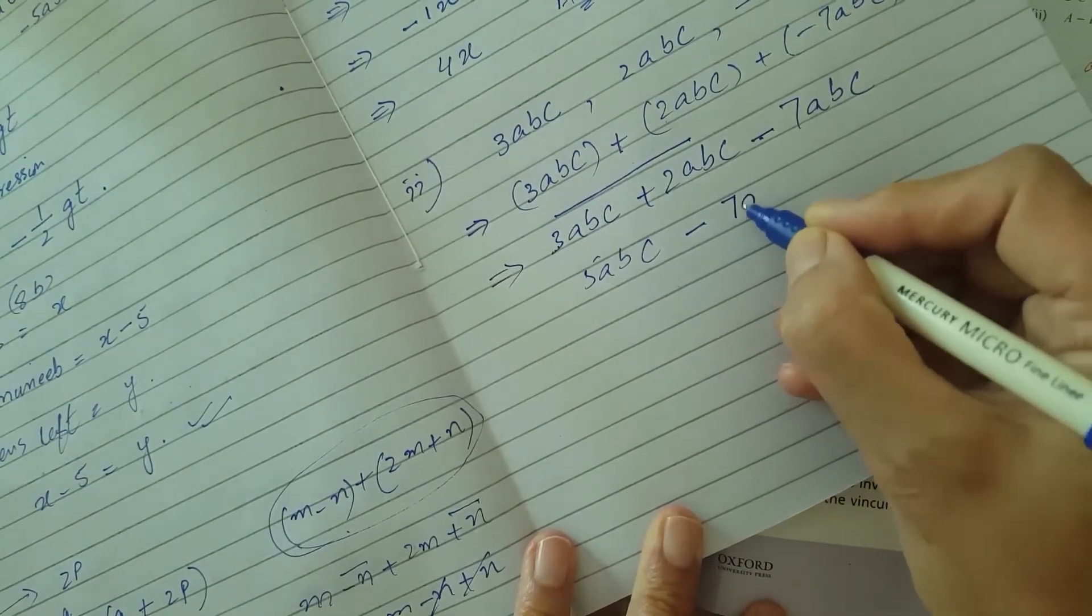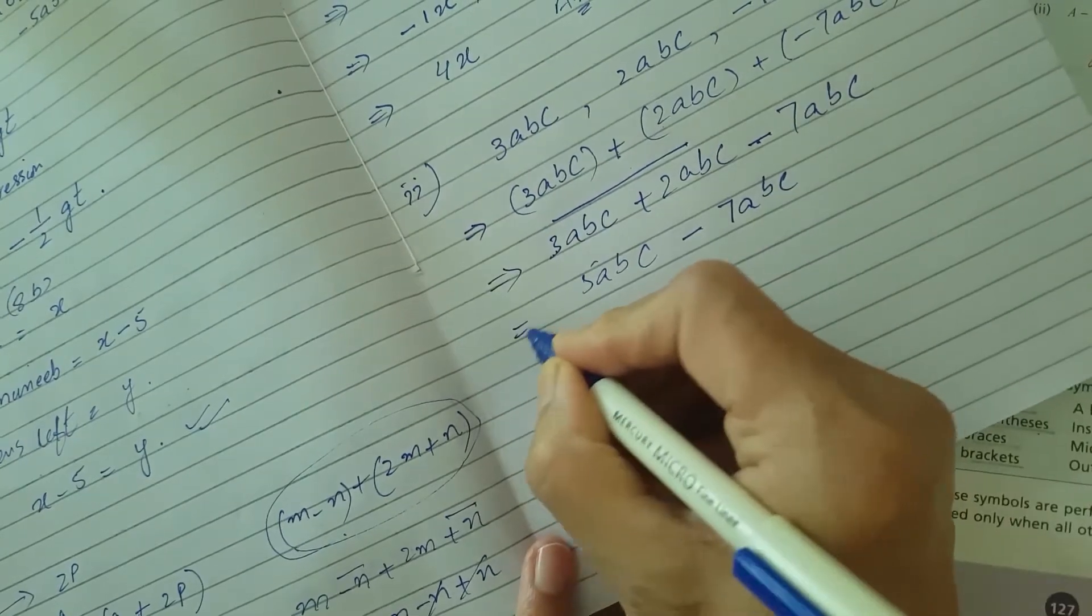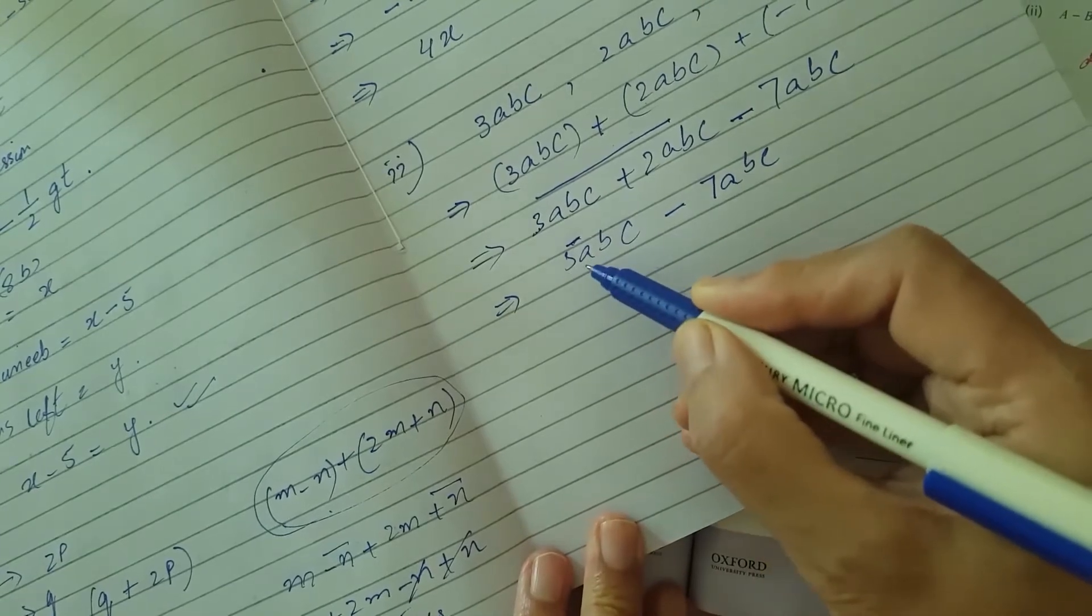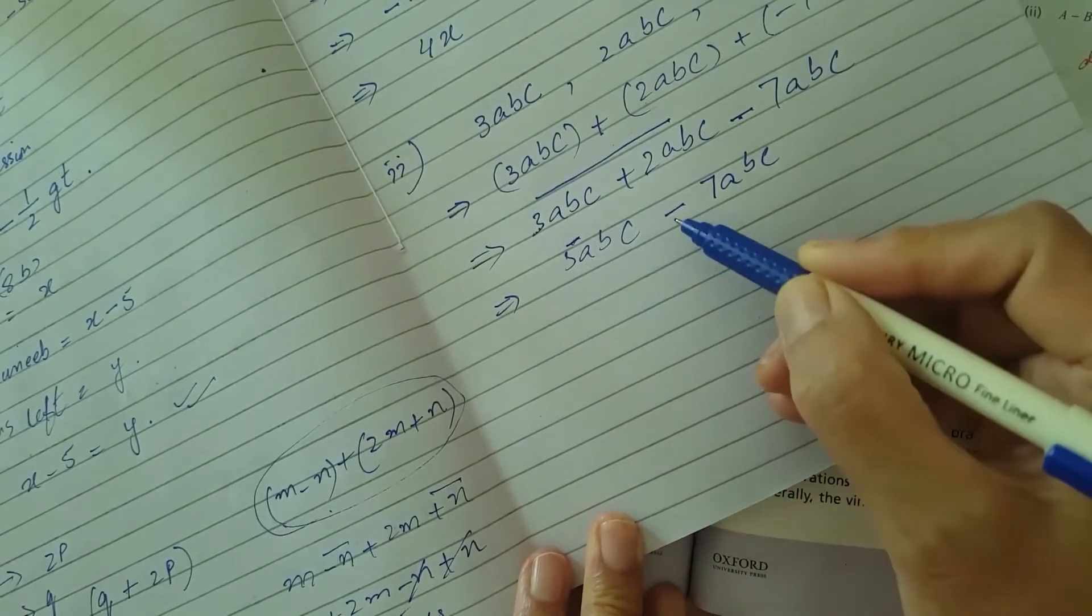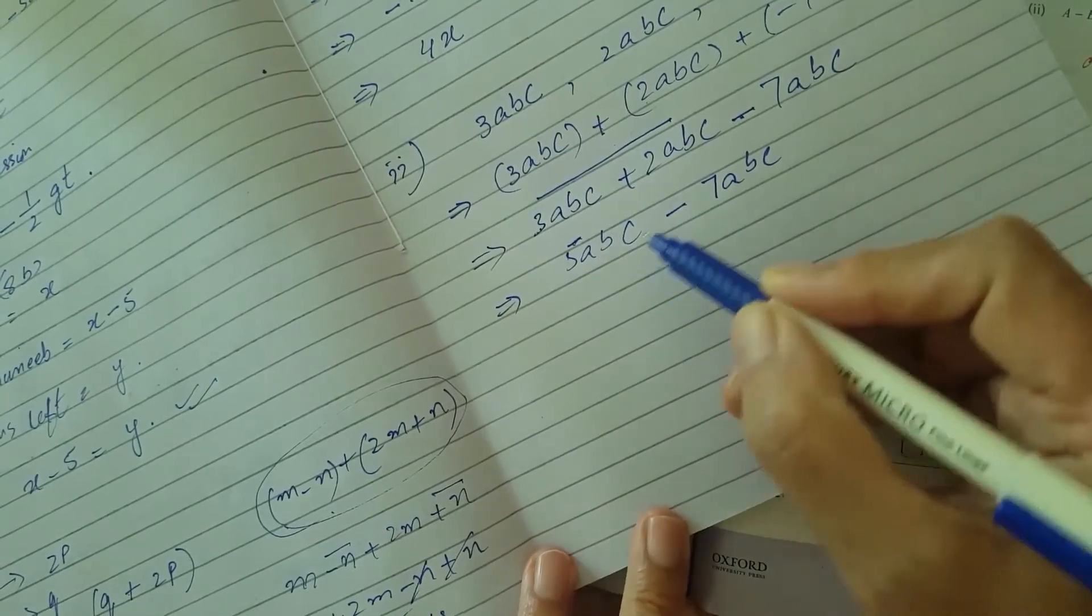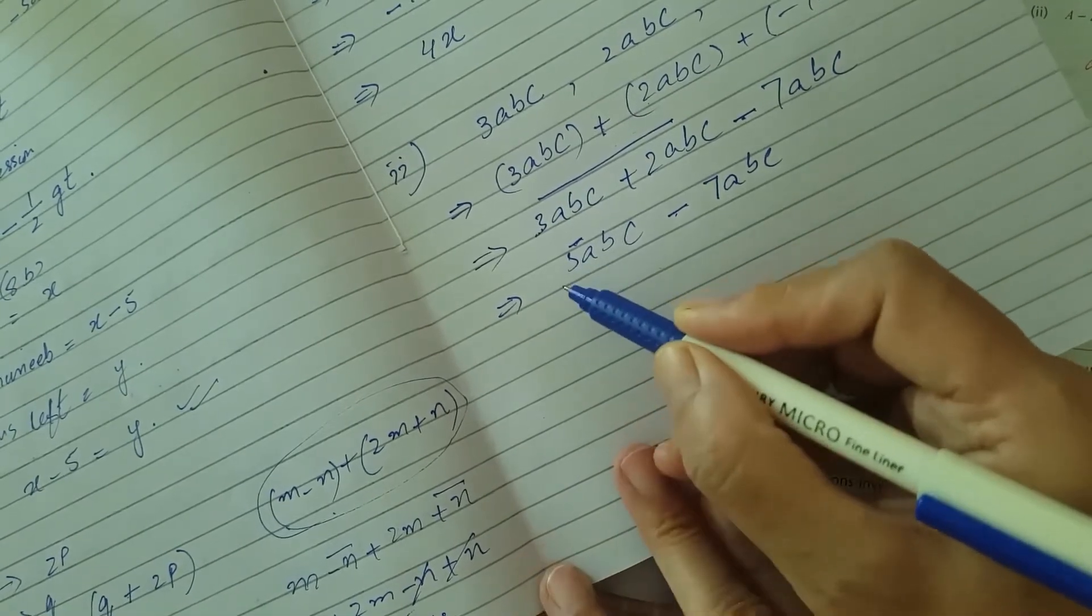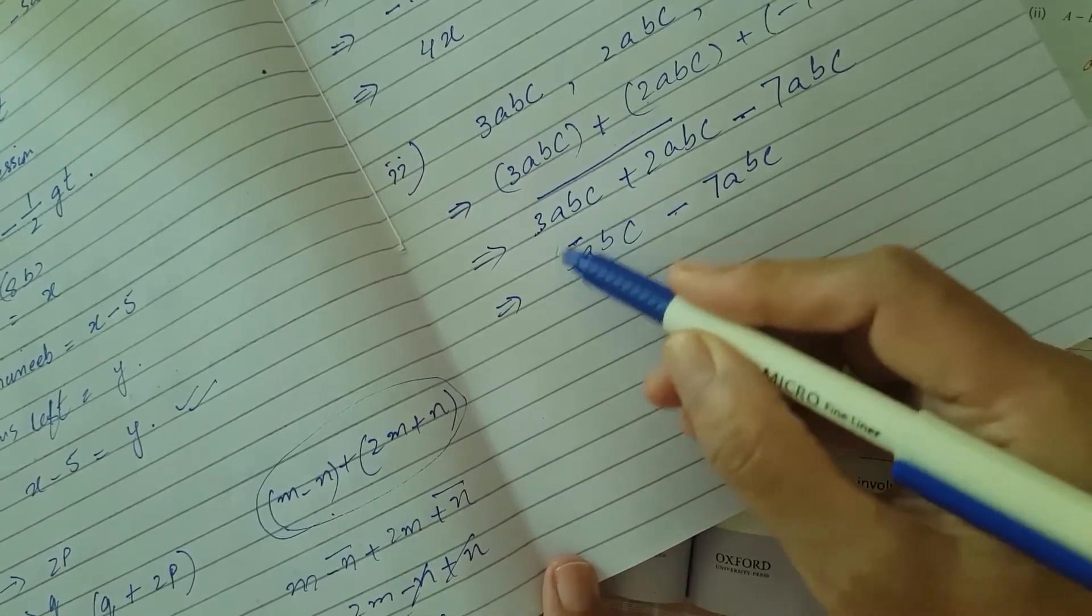So you have added these two terms, and the next which is left over is minus 7ABC. Now you will do the solution of these two terms: 5ABC positive minus 7ABC negative. So again two opposite signs are there, plus and minus.